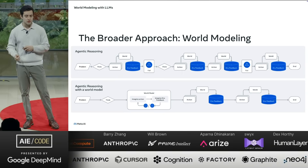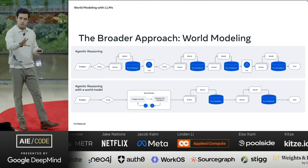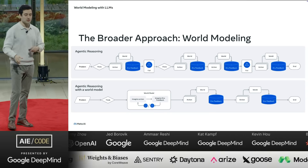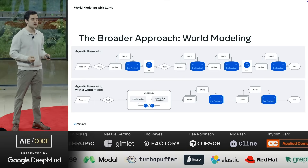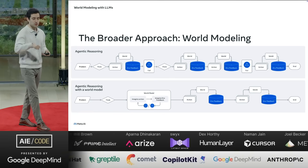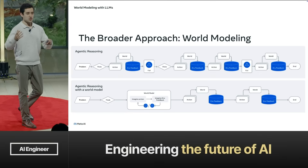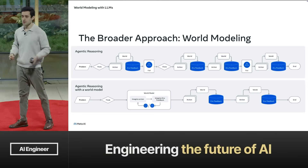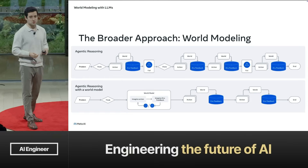In an agentic reasoning setting using this world modeling approach, we have a problem, a model that thinks about it, takes an action in the world, gets some feedback, maybe fails, thinks again, and iteratively continues with feedback from the environment. In code, that environment is just execution. But with a world model, we can actually simulate — we can imagine that action and get feedback in our imagined environment, generating execution traces about a program without executing it. This gives us the ability to be far more efficient with how we structure our agentic execution, since we don't have to interact with the real world until we're ready.